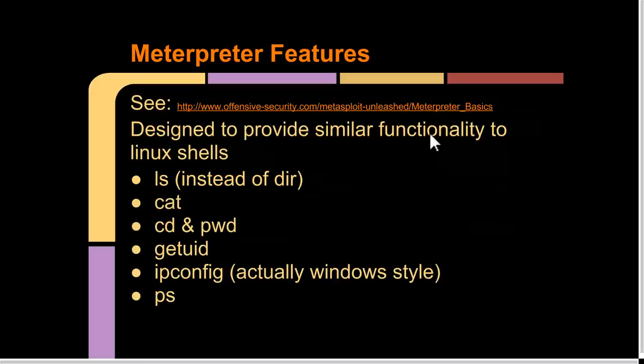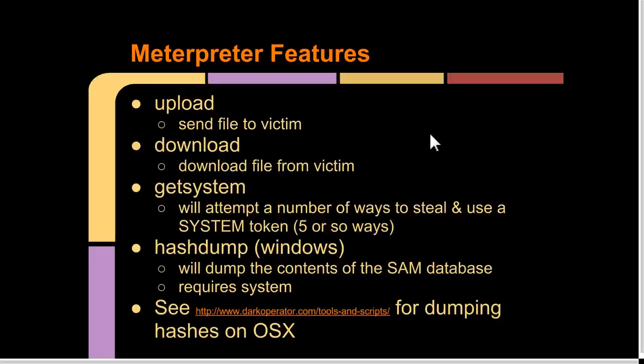Let's talk about the standard API for Meterpreter. It's designed to provide similar functionality to Linux shells: 'ls' for listing directory contents, 'cat' to print file contents, 'cd' and 'pwd' work just like Linux, 'getuid' is equivalent to 'whoami,' and 'ps' lists processes. Features also allow you to upload and download and manipulate the file system. 'Upload' lets you send a file to the victim system, 'download' retrieves files. 'Getsystem' I already talked about. 'Hash dump'—if I try to do a hash dump as an unprivileged token, it will fail because it needs SYSTEM token access to read the SAM database. The SAM database is protected by the kernel, so the SYSTEM token is essentially the only one allowed to access it.